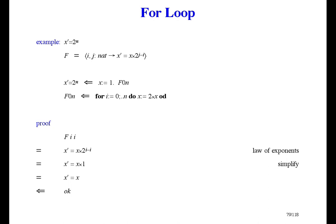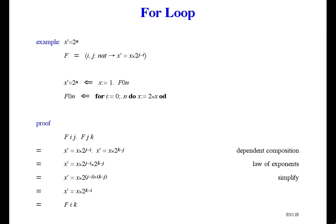That gives us three things to prove. The first is that F(I, I) is refined by OK — and that's because 2 to the I minus I is 1. The second is that F(I, I+1) is refined by the body — and that's because 2 to the I+1 minus I is 2, and doubling is what the body does. The last thing to prove is that F(I, J) followed by F(J, K) implies F(I, K) — and that's due to the law of exponents. It's a very small example, but it shows how the for loop rule works.